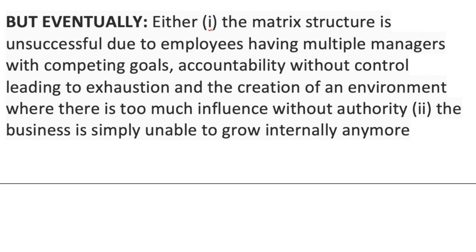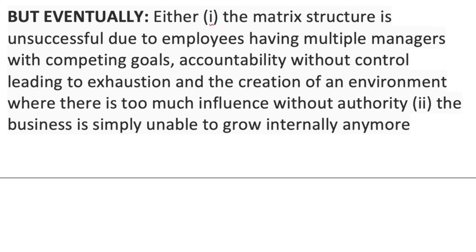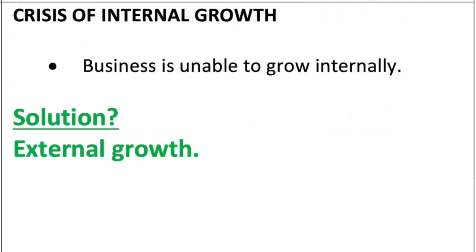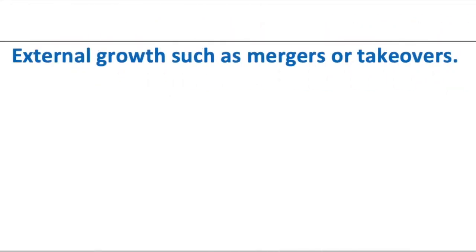The solution to the red tape crisis is collaboration, leading to the fifth phase: growth through collaboration. Matrix structures are introduced, adding a horizontal reporting line — perhaps a product group or supply chain manager — so employees can work across multiple projects, making the business more flexible. This works well with a sophisticated information system, but the matrix structure can lead to employees having multiple managers with competing goals, accountability issues, exhaustion, or simply the business being unable to grow internally anymore.